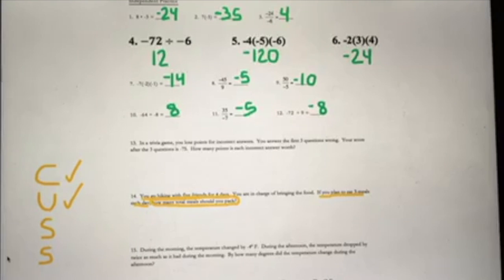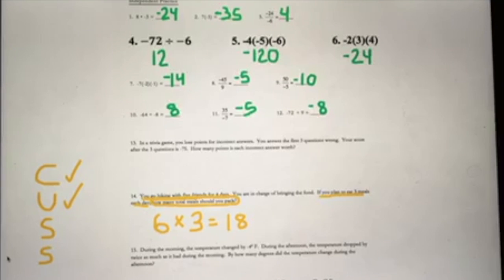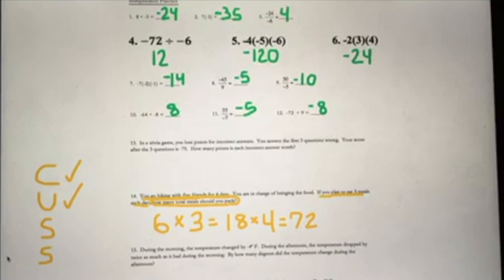There's an error in that process. You forgot something very important — you forgot yourself. It says you go hiking with five friends, so that's you plus your five friends, meaning there are six people in total. So if you want to make sure you have enough meals, you have to include yourself in that calculation. What we should do first is 6 times 3, which gives us the meals eaten per day, and then 18 times 4 gives a total of 72 meals. Some students ask: could I have just done 6 times 4 times 3? Try that and see if you get the same value.